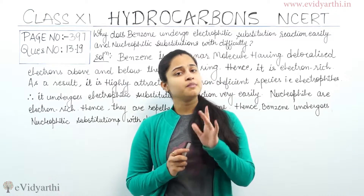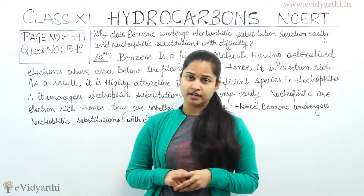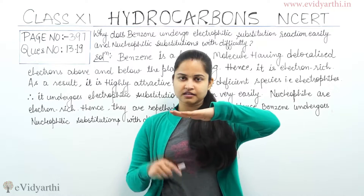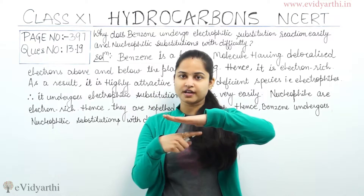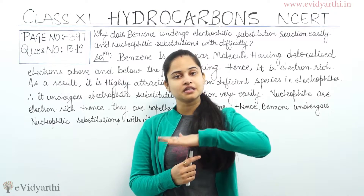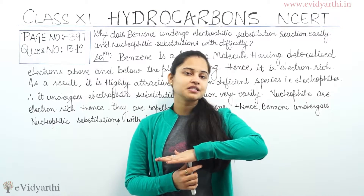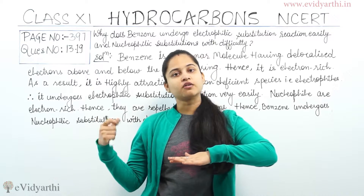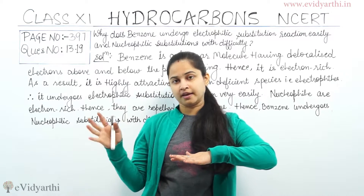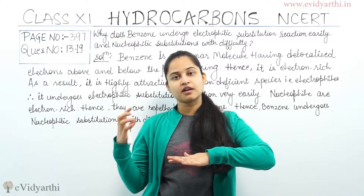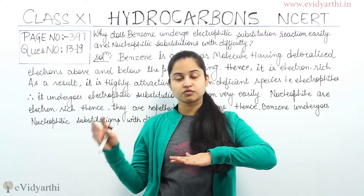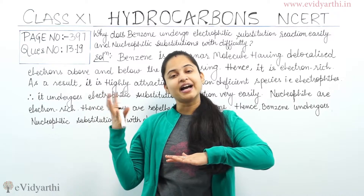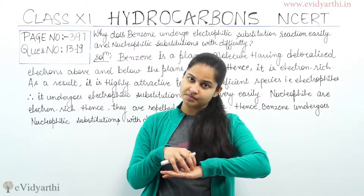So, benzene is an electron-rich molecule. Since benzene is electron-rich, and an electrophile is electron-deficient — electrophile means electron-loving and electron-deficient — the electrophile, which is deficient in electrons, will be highly attracted towards benzene.